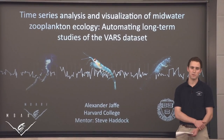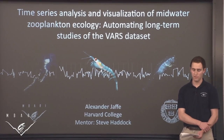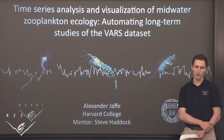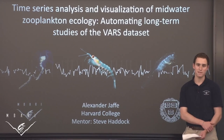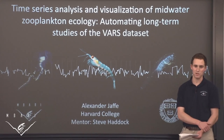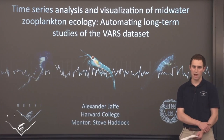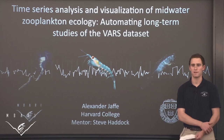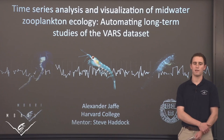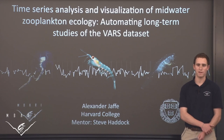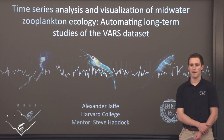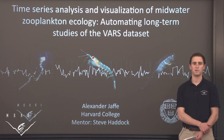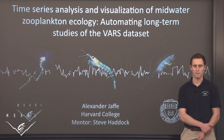Correlations between normalized data for krill, siphonophores, and ctenophores showed a number of seasonal and periodic trends. We also reported a number of trends in vertical distribution and discussed niche partitioning and distributions around the oxygen minimum zone.